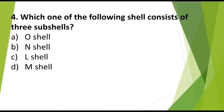MCQ number 4: Which one of the following shell consists of 3 sub-shells? Option A: O-shell, Option B: M-shell, Option C: L-shell, Option D: M-shell. Correct answer is M-shell.